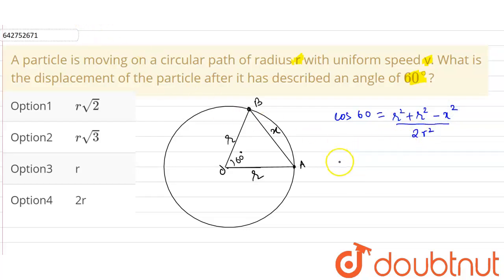Now from here what we get is 2r squared into cos 60 will be equal to 2r squared minus x squared, and cos 60 is half. So 2r squared into half is equal to 2r squared minus x squared.